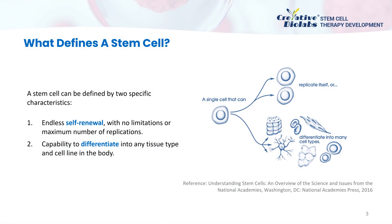The human body is made up of over 200 different types of cells, all of which come from a pool of stem cells in the early embryo. Stem cells can be defined by two specific characteristics: endless self-renewal with no limitations or a maximum number of replications, and the capability to differentiate into any tissue types and cell lines in the body. A stem cell can replicate itself or differentiate into cells that carry out specific functions of the body, such as skin, blood, muscle, and nerve cells.